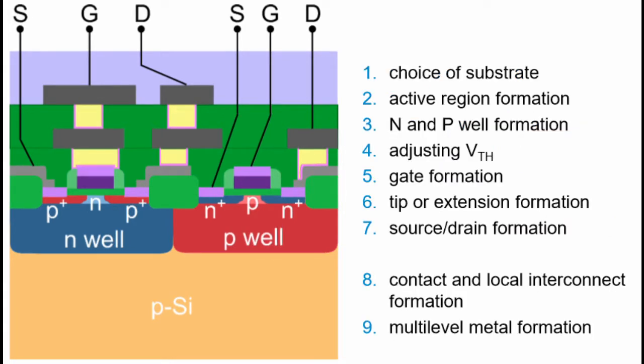The initial step is to choose the substrate. The second, to form the active region. The third, to form the N and P well. The fourth, adjust the threshold voltage — increase the threshold voltage. Five, form the gate. Six, form what are known as tips or extensions. Seven, form the source or drain. Then you have processes to join it to the rest of the circuit or the circuit board, including interconnects and multi-level metal formation.